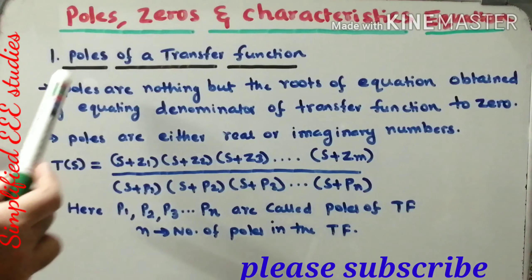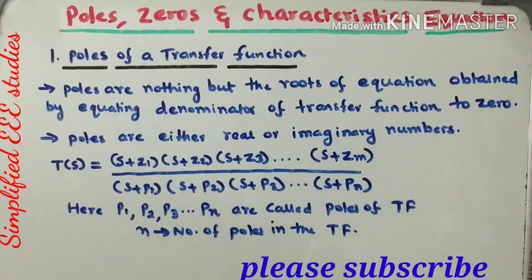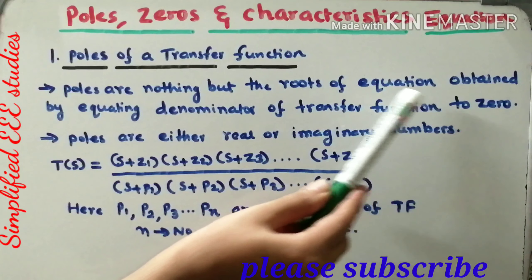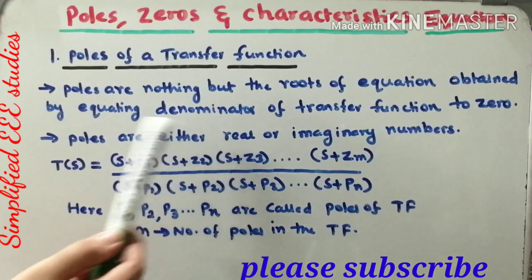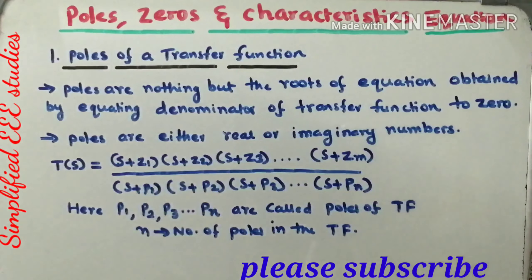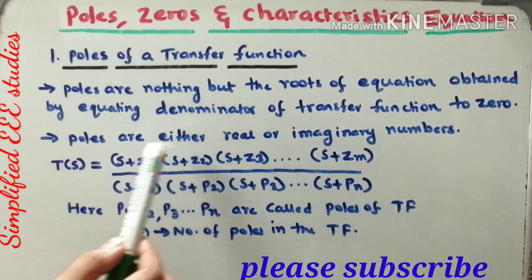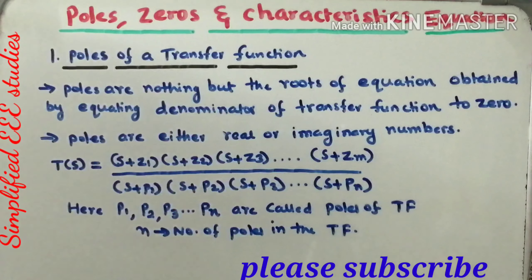Let me discuss poles of a transfer function first. What do you mean by pole? Moving on to definition: poles are nothing but the roots of the equation obtained by equating the denominator of the transfer function to zero. The roots of the denominator polynomial are generally called poles. You calculate the roots of the denominator polynomial to find the number of poles. Poles can be either real or imaginary numbers.